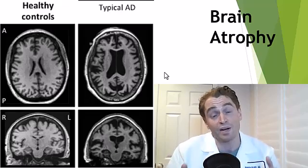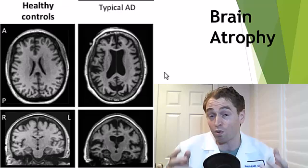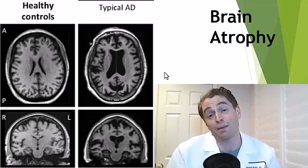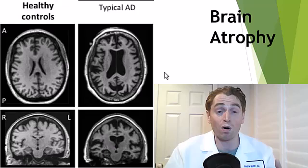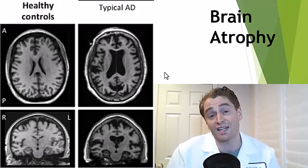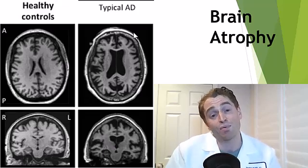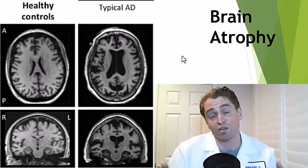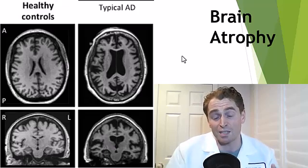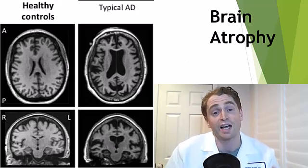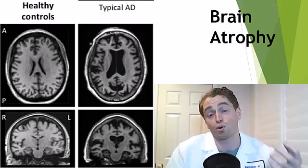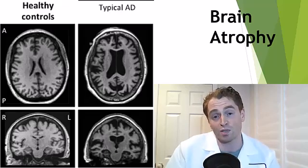In some people it's roughly equal to normal aging, whereas in others it can be as high as 1% per year or more, which is greatly accelerated. Brain atrophy is associated with worsening neurological symptoms, especially cognitive symptoms in multiple sclerosis, often in progressive multiple sclerosis.